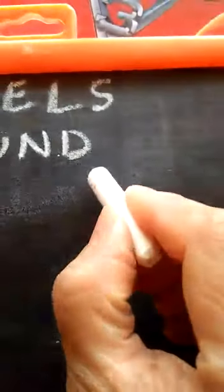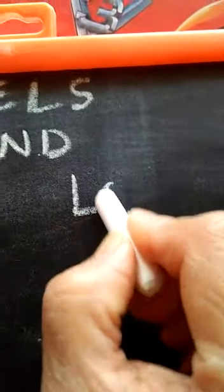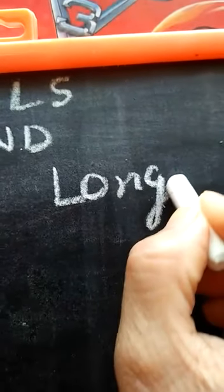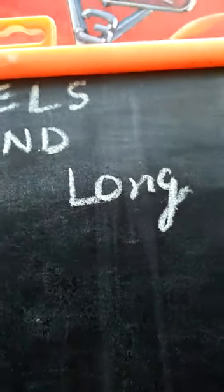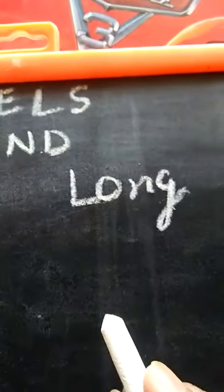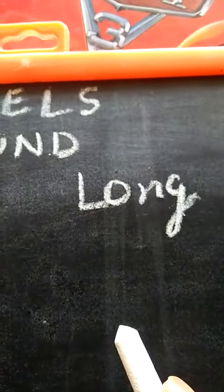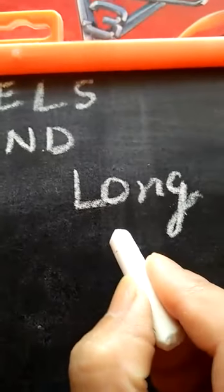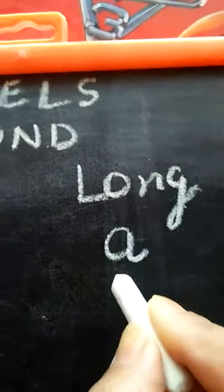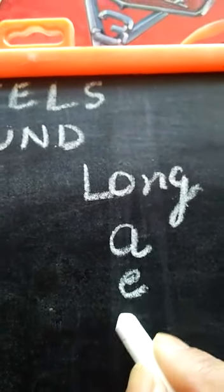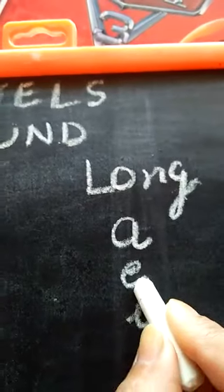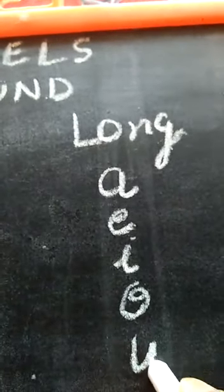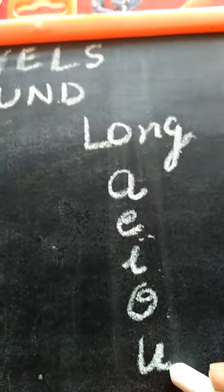Today we will do long vowels. Long vowels means when the vowel says its name. You know the names of vowels — that is A, E, I, O, U. A, E, I, O, U.